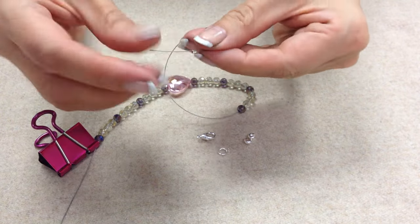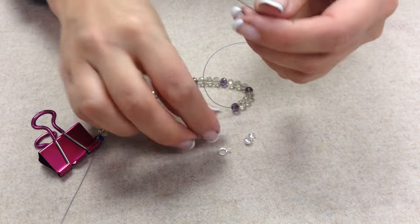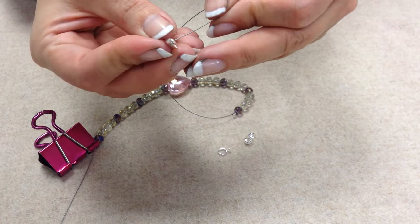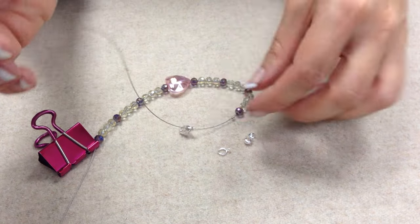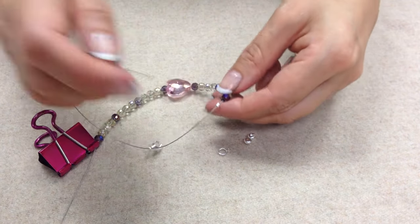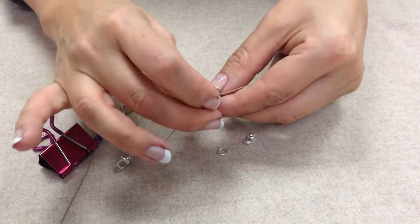First, thread on one of your crimp tubes and thread the end of the bead stringing wire through the clasp. There's a hole at the end of the clasp for you to do that.